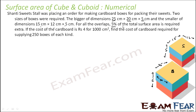For the overlap, 5% of the total surface area is required. So we have to first find the total surface area and then get 5% of it to get the overlap. The cost of cardboard is rupees 4 for 1000 centimetres square, and we need to find the cost of cardboard required for supplying 250 boxes.